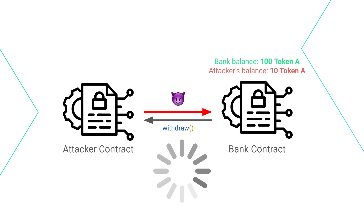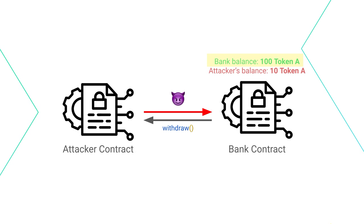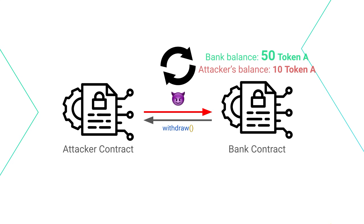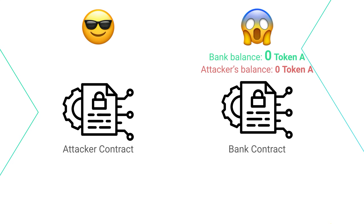Since the first withdrawal is still pending, the fund balance recorded on the bank account hasn't been deducted yet, making the bank contract think the attacker contract is withdrawing for the first time. This happens recursively until the bank contract is drained and the attacker successfully steals all the funds within the bank contract.